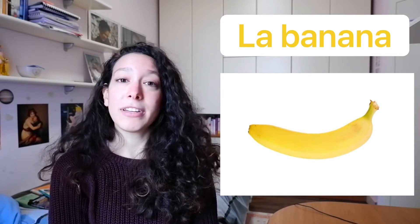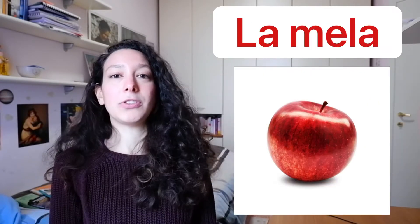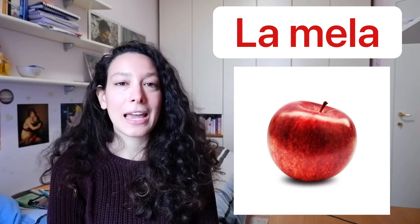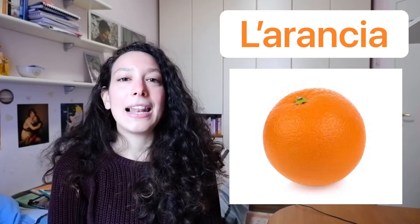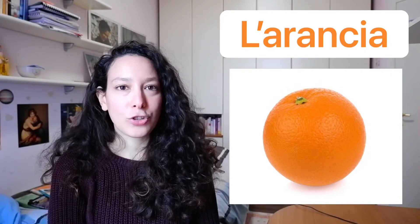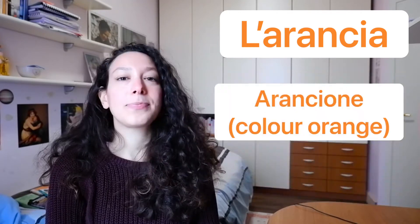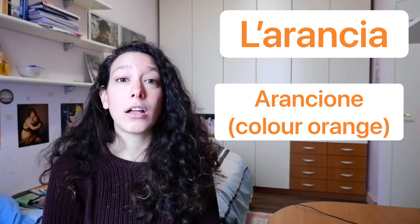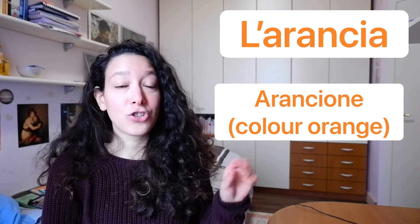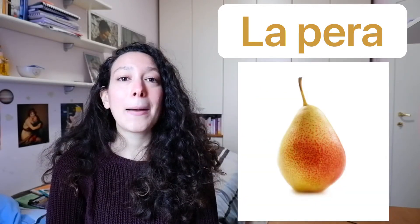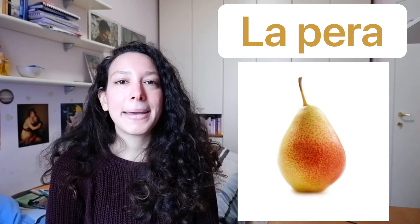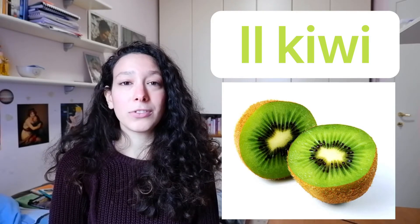Let's move to the next ones: la mela, l'arancia — be careful not to confuse this with the color arancione: arancia, arancione. La pera, il kiwi. Kiwi is not an Italian word of course, but it's quite common in Italian and we eat them a lot, especially in autumn and winter.